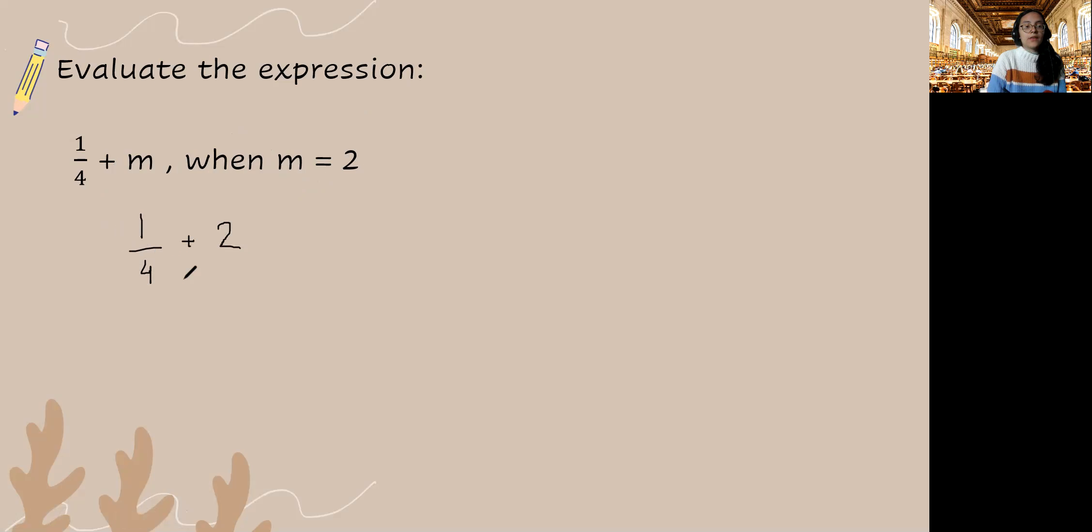So we have 1 fourth plus m and we're asked to evaluate when m is equal to 2. So wherever we see m we are going to write 2. Now what do we do here? If you recall, in order for us to add these two things we need to have a common denominator. So how do we get a common denominator? Well if you recall, when we have numbers like 2 we can actually express this as a fraction, it would be 2 over 1. And this can help us so that we can get a common denominator. Or you can just straight away multiply this top and bottom with 4. So either way you'd still need to know that this is another way to express this. Okay, so our common denominator here is going to be 4.